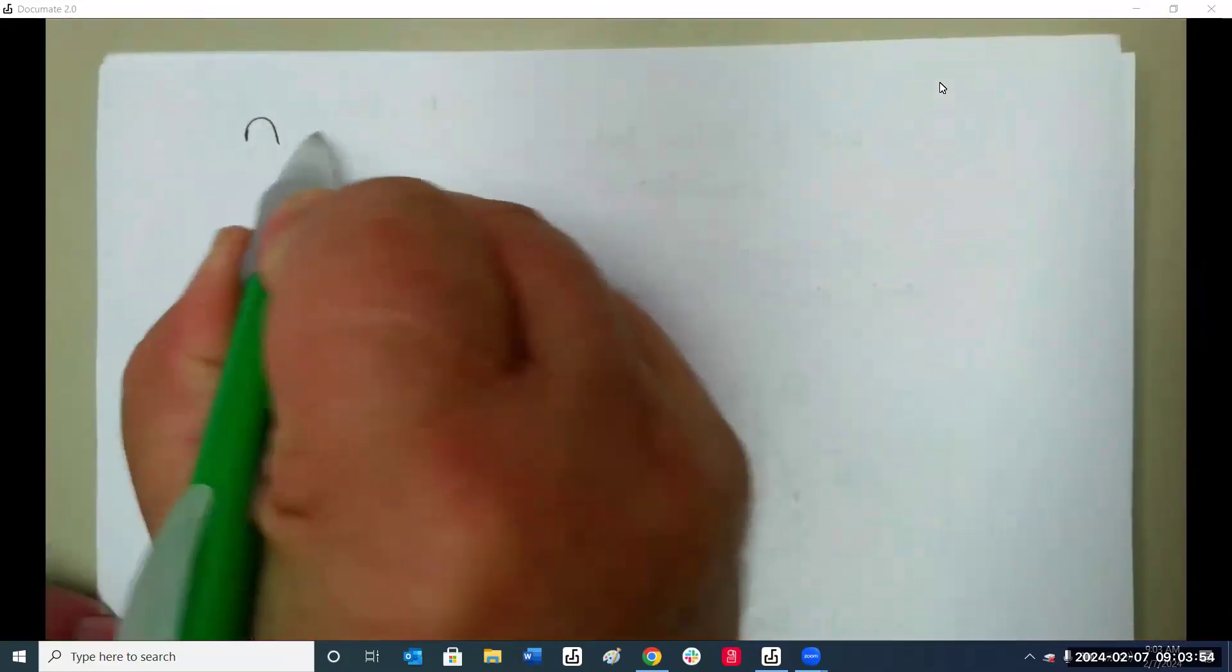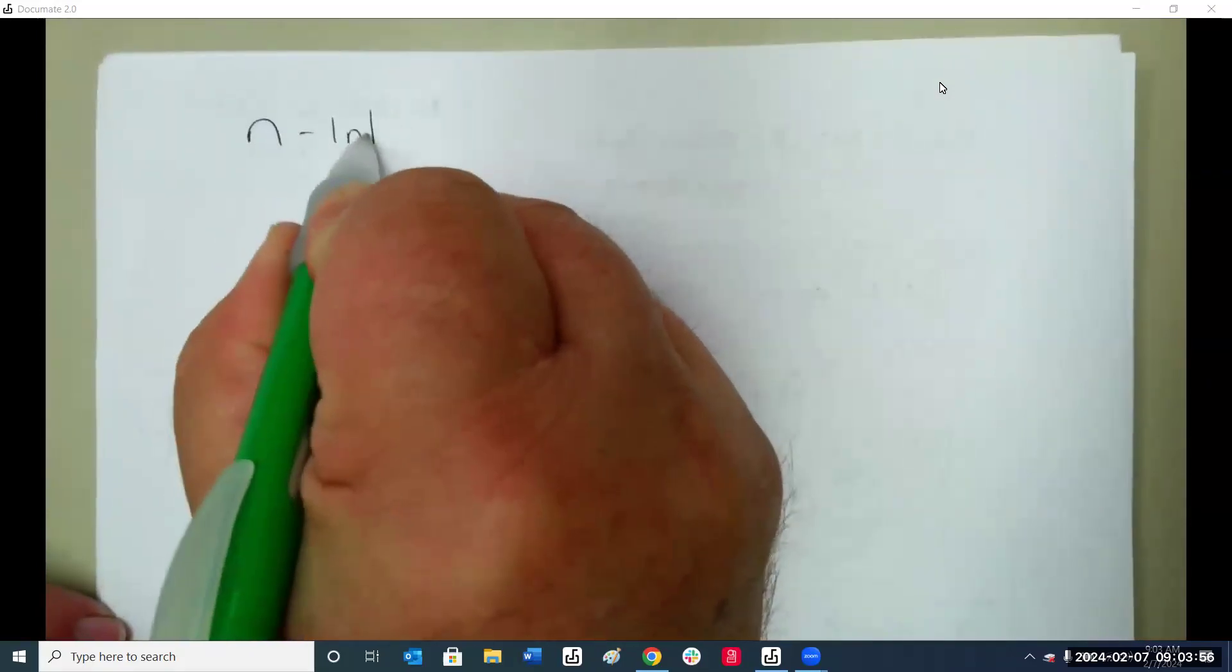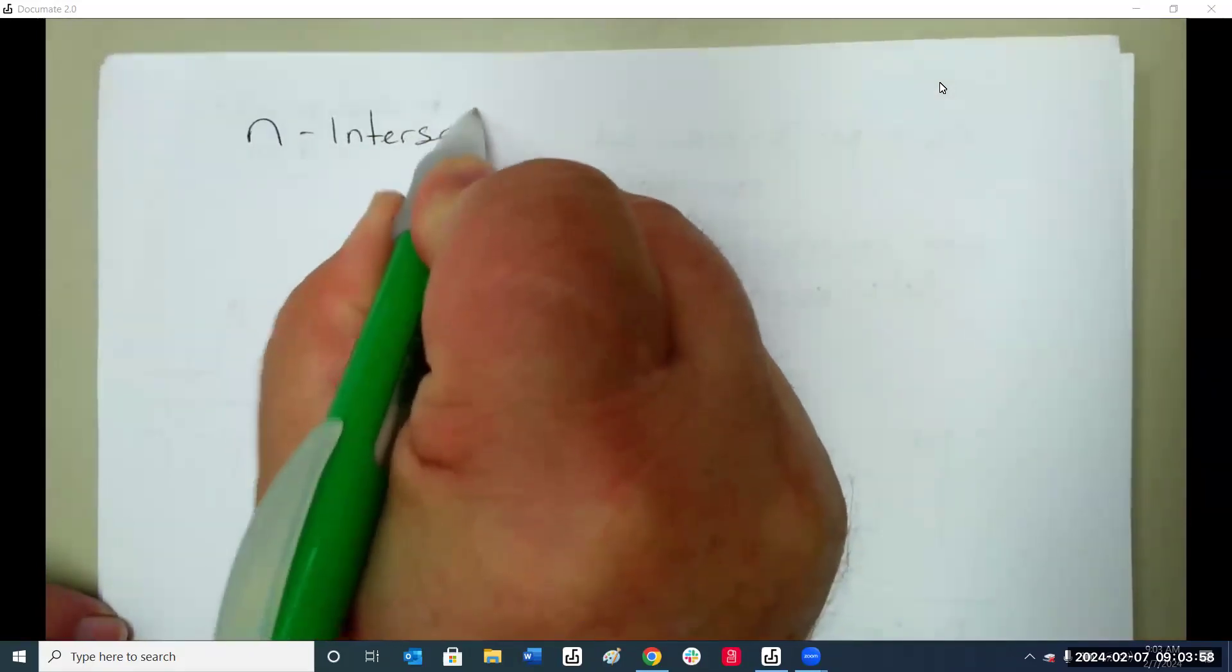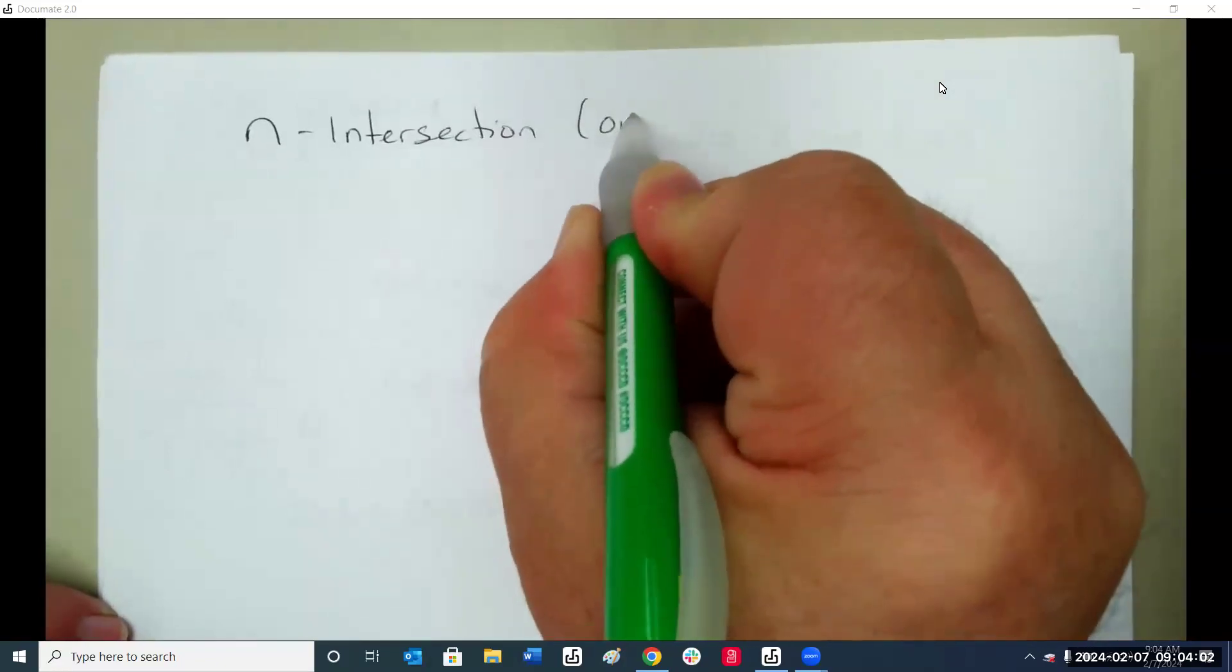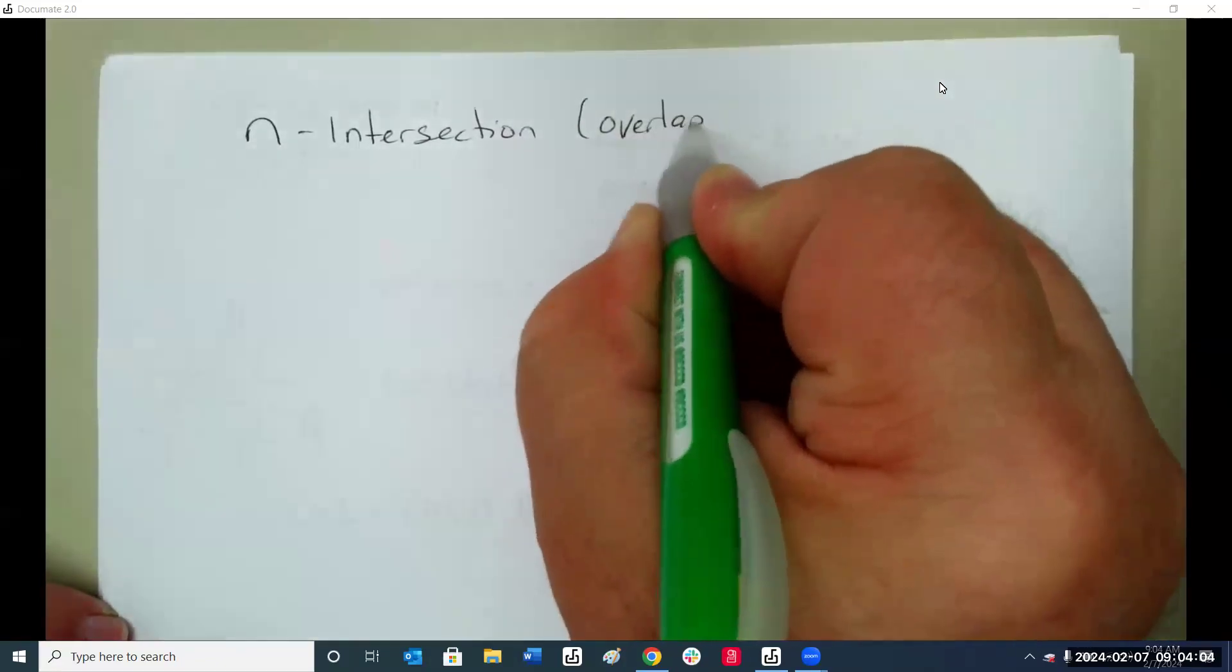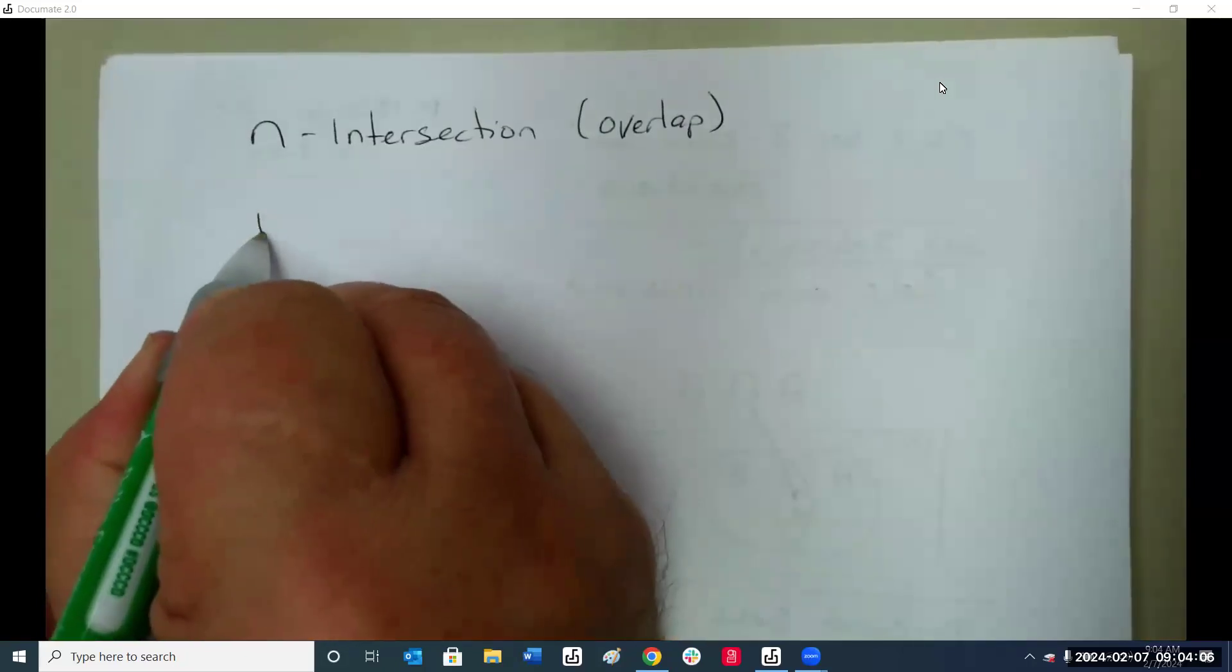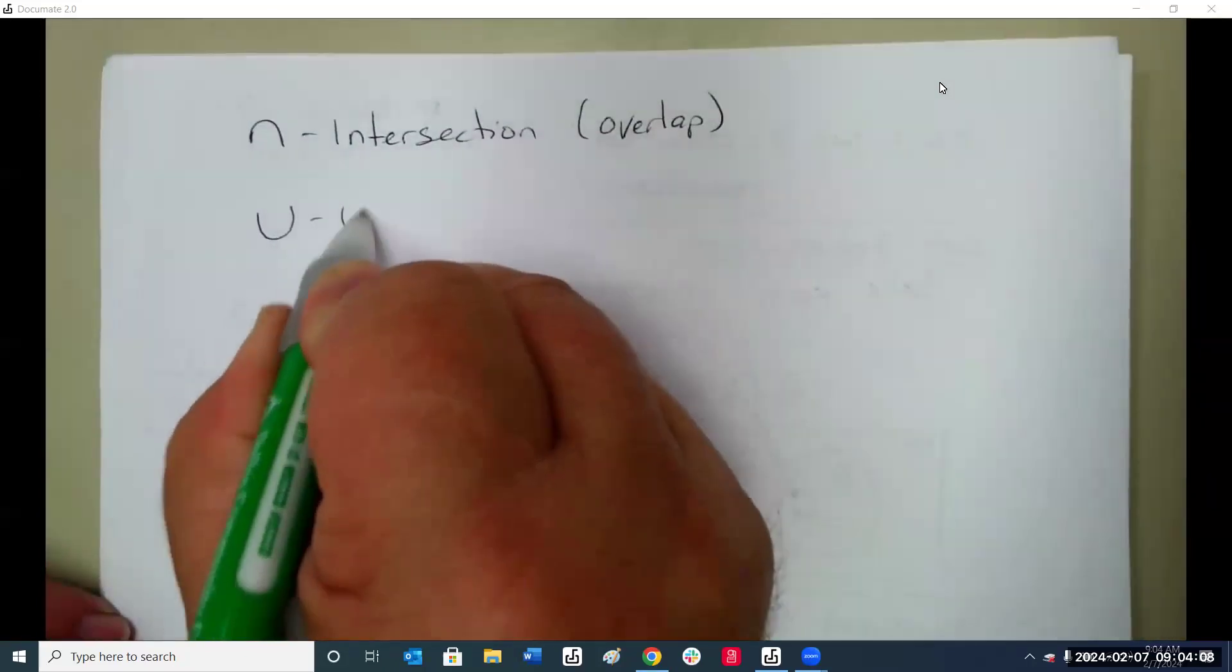The opposite, not really the opposite, of this symbol, which means intersection or overlap, the U stands for union of two or more sets.